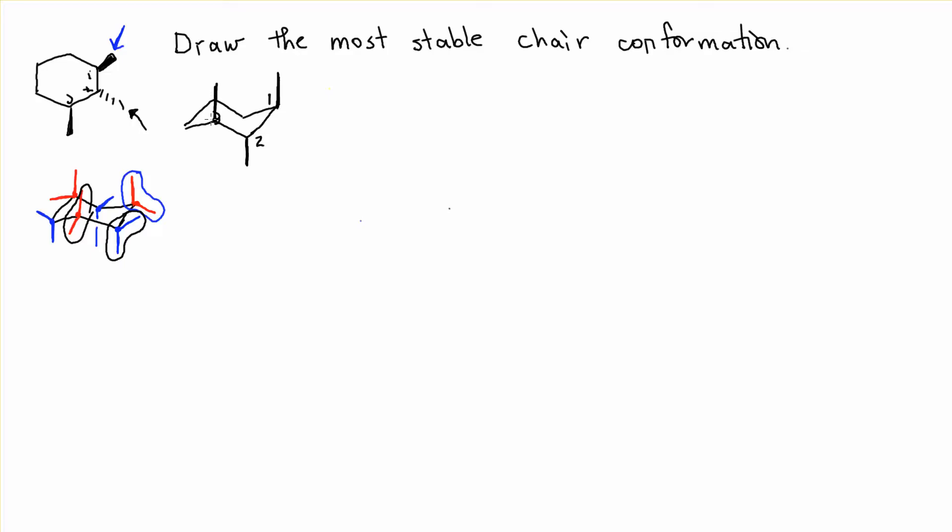We have three axial substituents. Axial groups are unstable because of the 1,3 and 1,5-diaxial interaction.